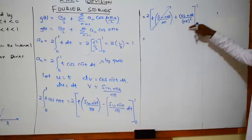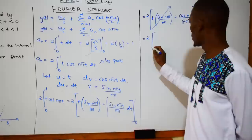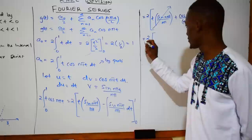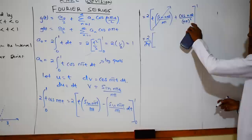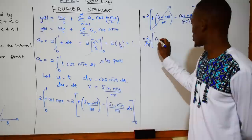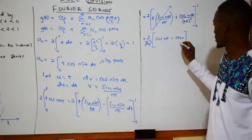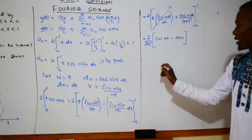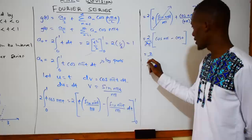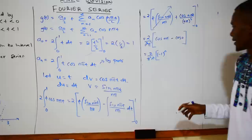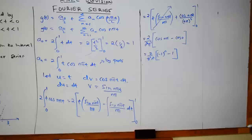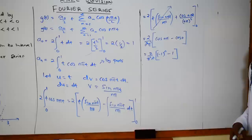Applying the limits: when we put t = 1, sin(nπ) = 0 so the sine term vanishes. We are left with only the cosine part. So we have 2·[cos(nπ)/(n²π²) − cos(0)/(n²π²)], which equals 2/(n²π²)·[cos(nπ) − 1]. We know cos(nπ) = (-1)ⁿ and cos(0) = 1.